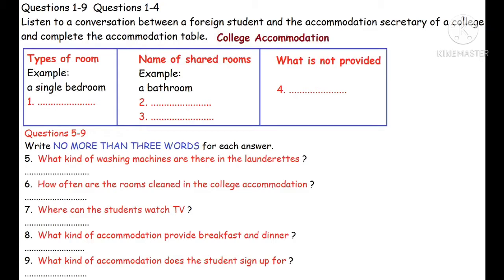First you have another chance to look at questions one to nine. You will see that there is an example which has been done for you on the Accommodation Table. Conversation relating to this will be played first. Now we shall begin. Listen carefully and answer questions one to nine.